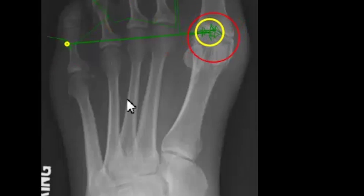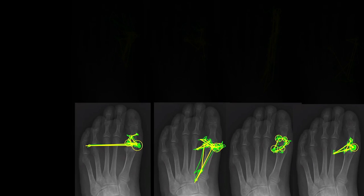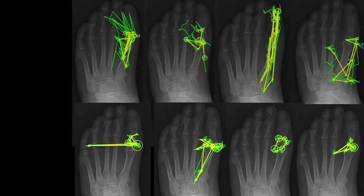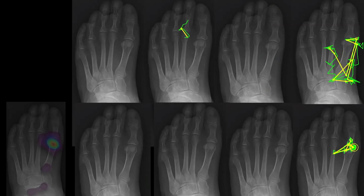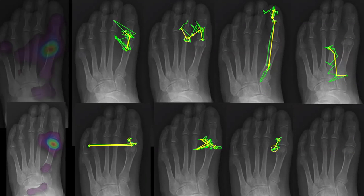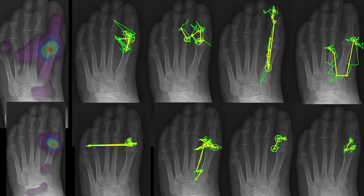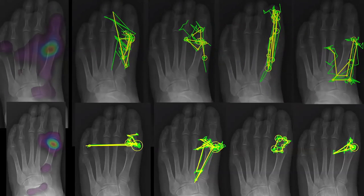Larger circles mean longer time spent during the test. Red circles represent a current fixation in progress. Once again, gaze patterns of the advanced group are concentrated at the first metatarsophalangeal joint and proximal articulations. The novice group behavior is less concentrated and demonstrates significant backtracking across the hallux and lesser metatarsals. This novice behavior is correlated with searching phase type behavior.